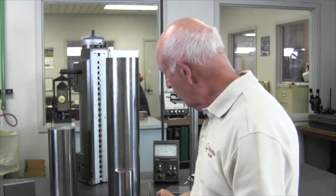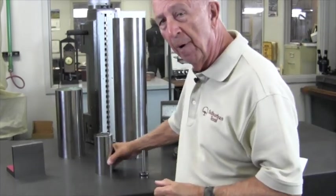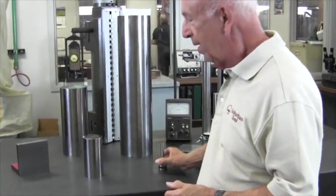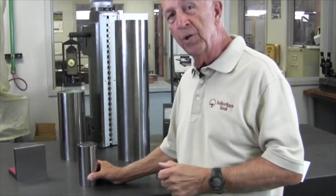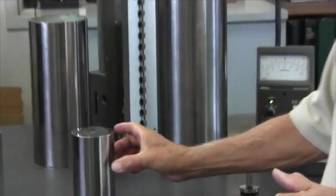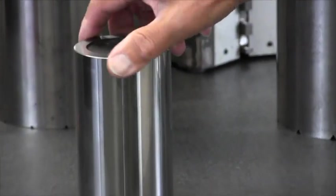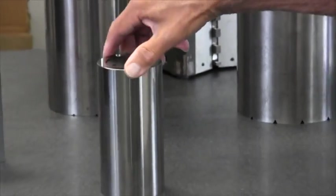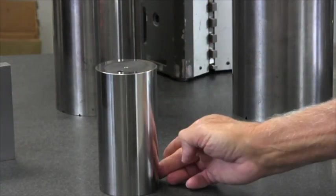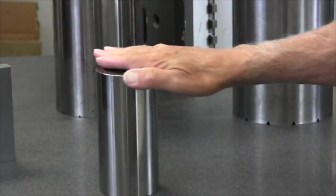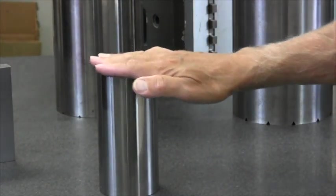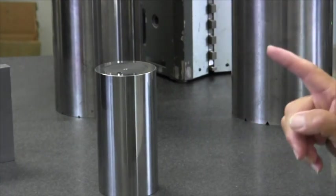If you can zero in here on this little guy right here. We call this a cylinder square because it is round as a cylinder and it's square to the surface. So if I rotate this in any direction, it will be perfectly square with the surface because it's been lapped within millionths and we know it's exactly the way it's supposed to be.